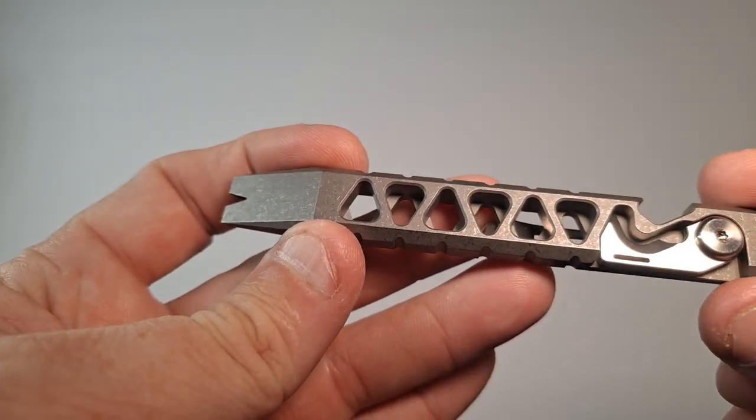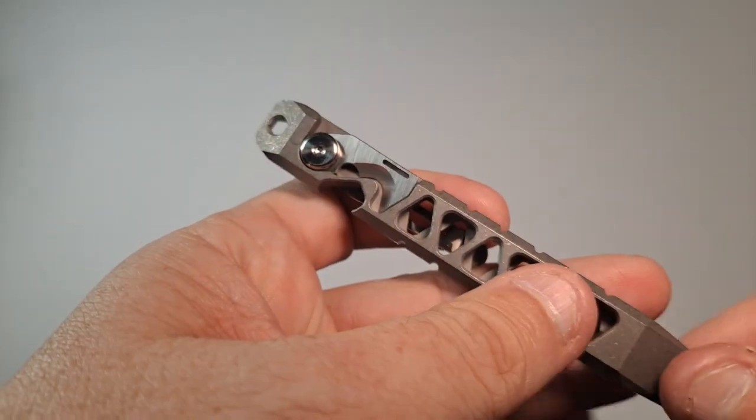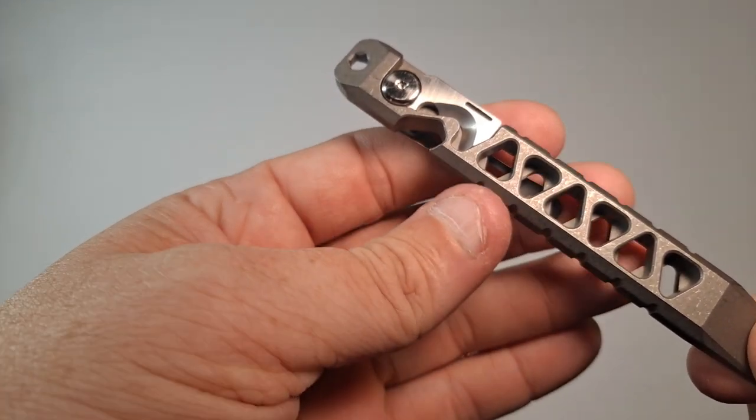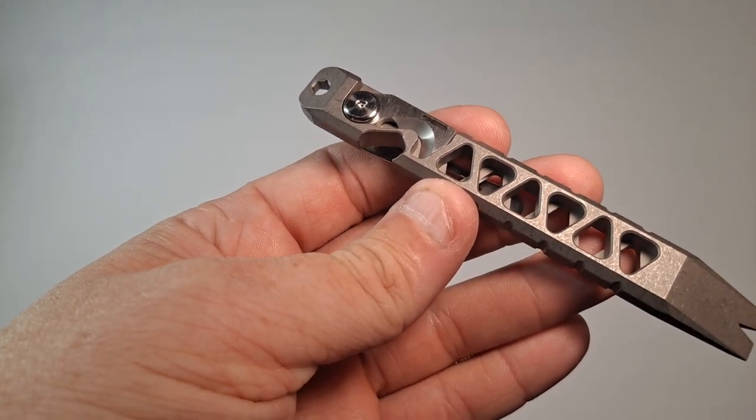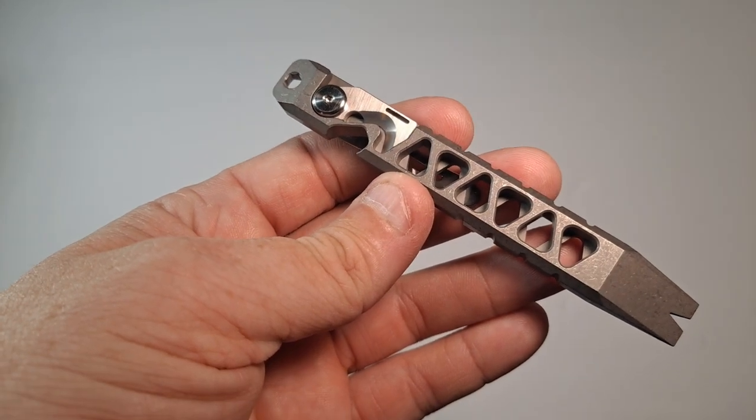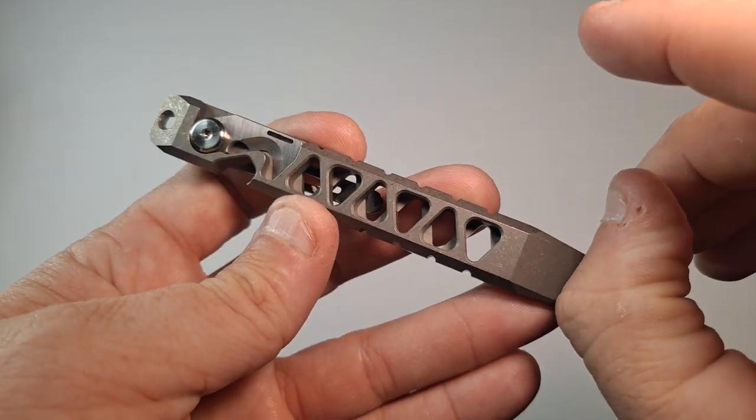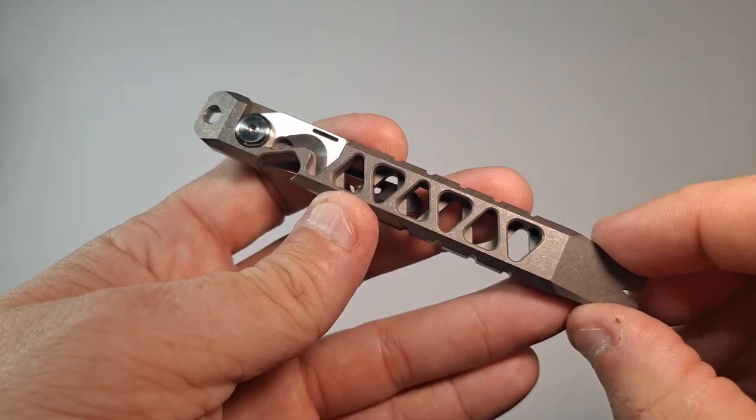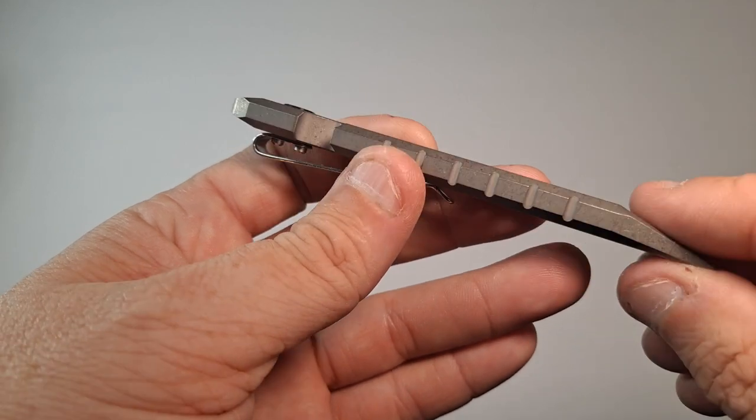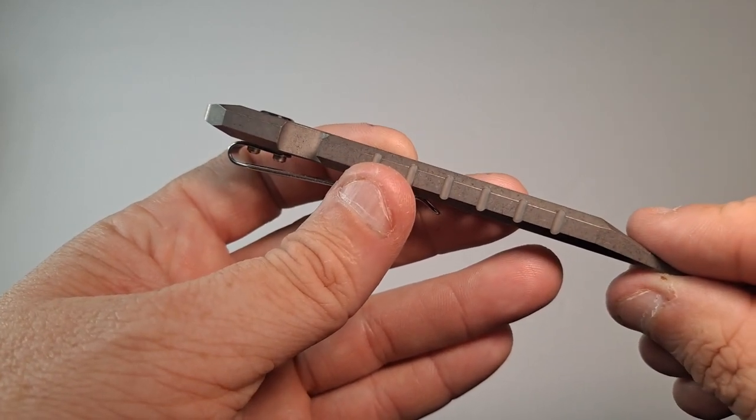By the way, this is only 3.52 ounces. Length is 5.63 inches. So it's about half inch, it's a little less than half inch thick or width. And then probably about a quarter inch that way.